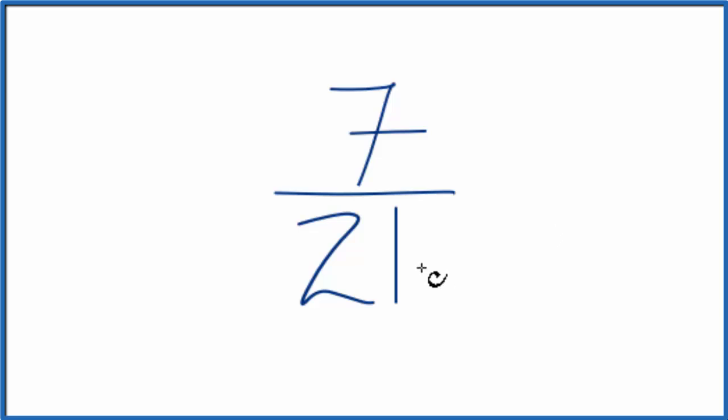We need to find a factor that goes into both 7 and 21. I know that 7 goes into 7 one time and it goes into 21 three times. Three times seven is 21.